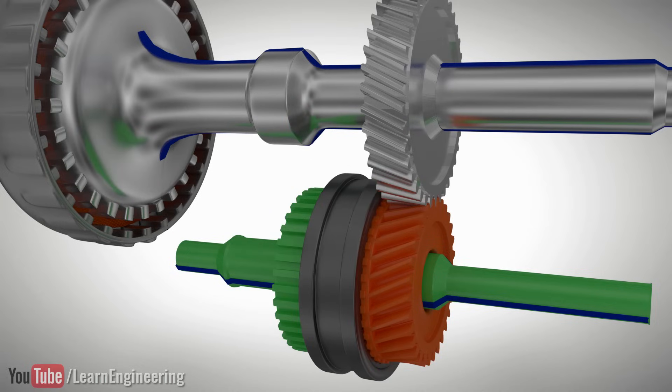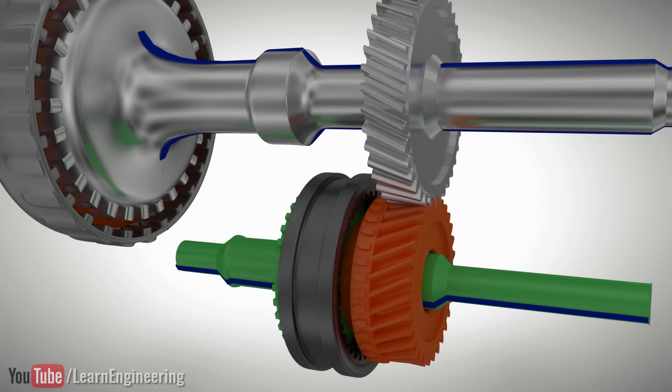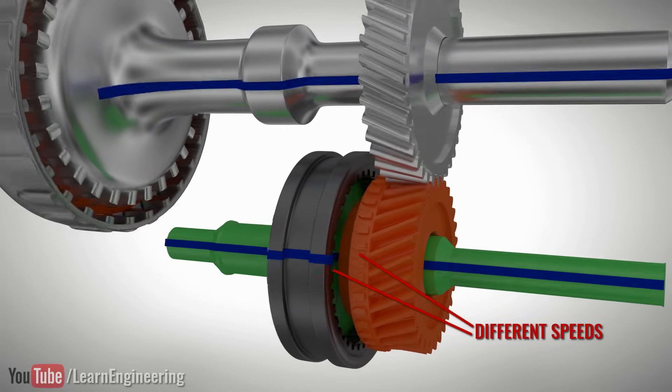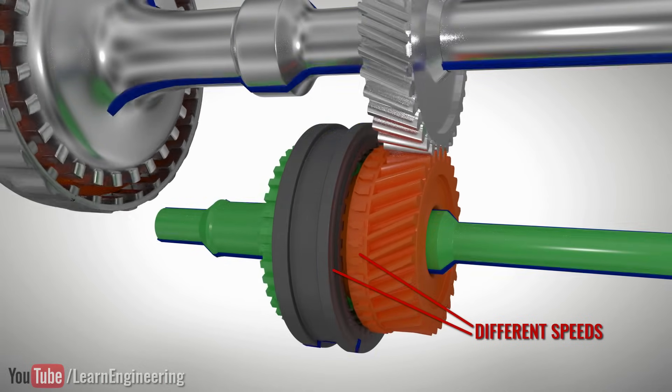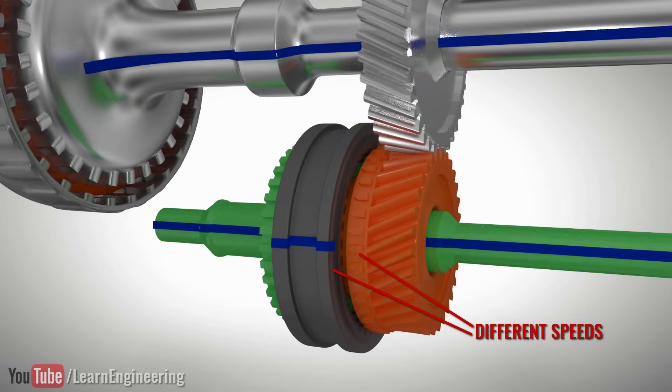But the sleeve and gear will be rotating at different speeds during the transmission operation. So it is impossible to achieve a connection at this stage. We have to achieve a speed match in order to facilitate the connection.